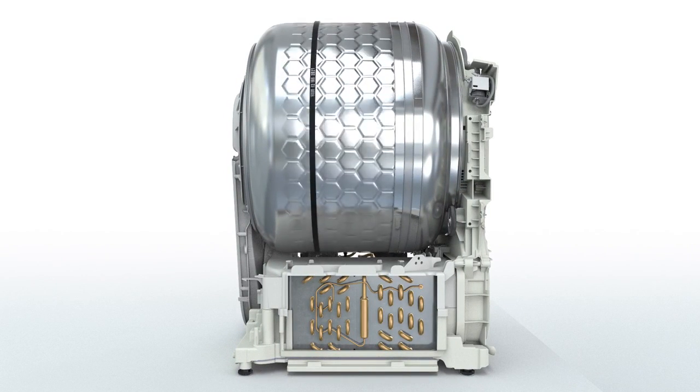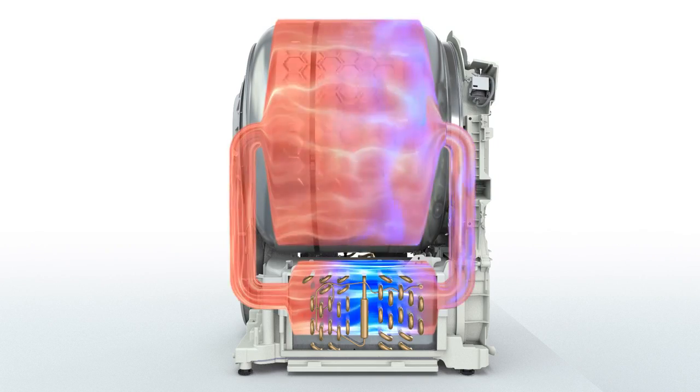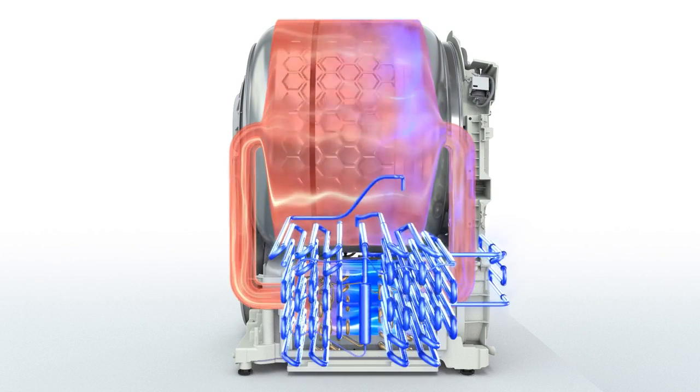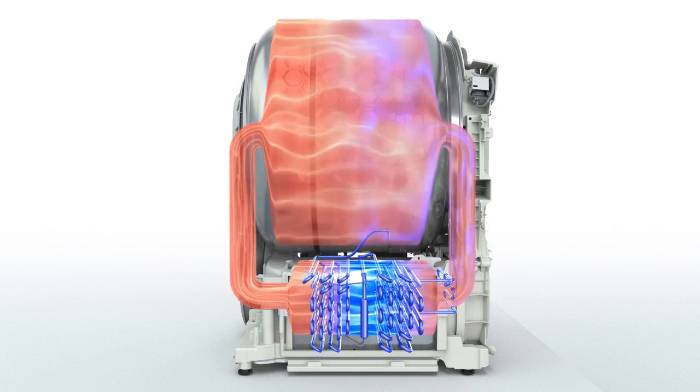Heat pump dryers operate on the basis of two circuits. An air circuit for drying laundry, and a closed coolant circuit to extract heat from process air.